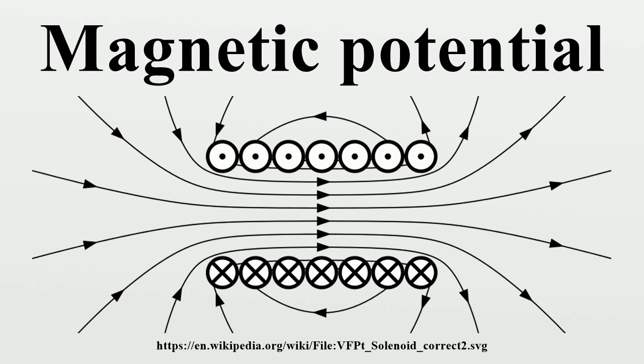But A would not change. This is an example of a general theorem: the curl of a polar vector is a pseudo-vector, and vice versa.